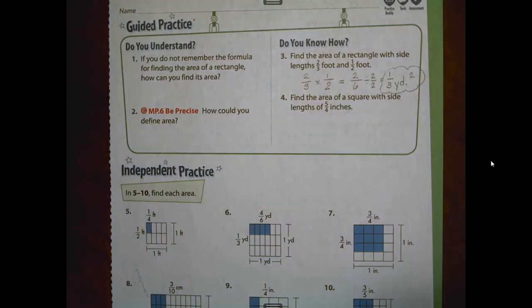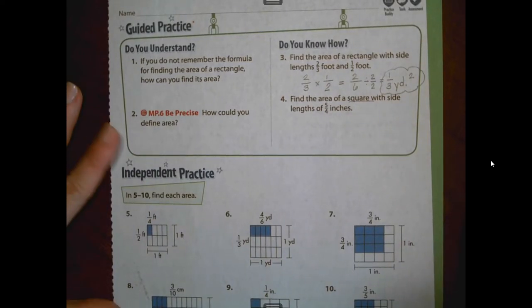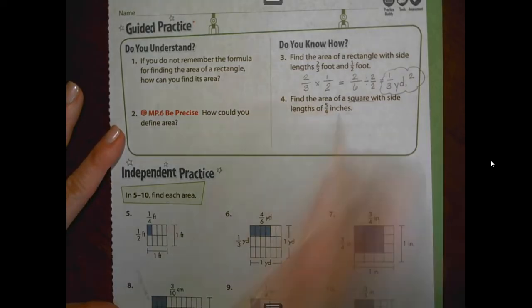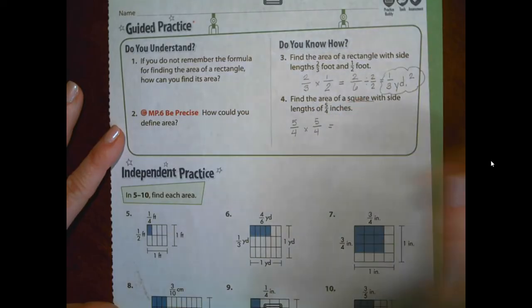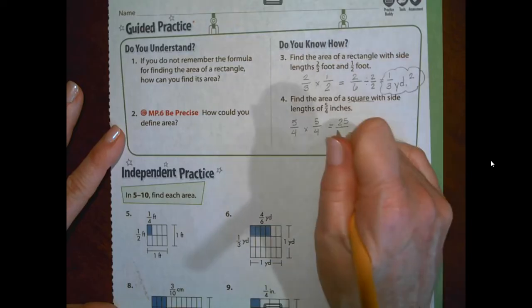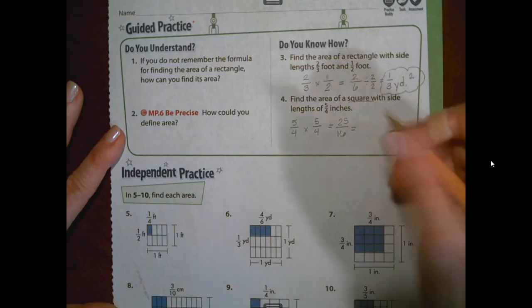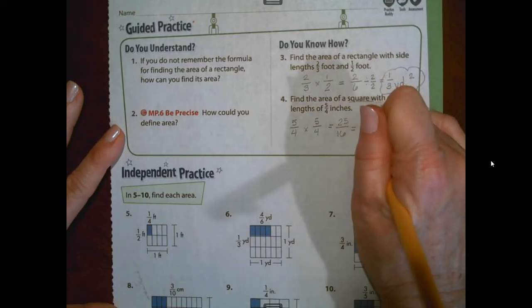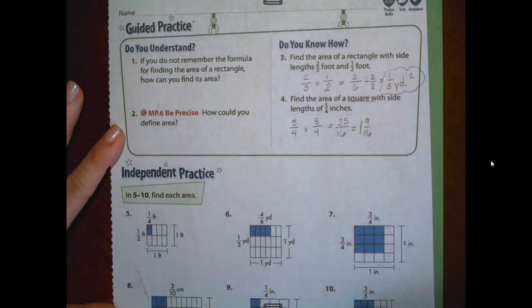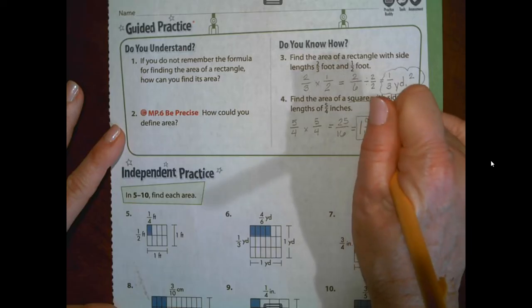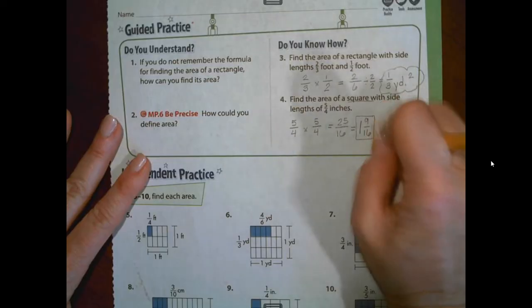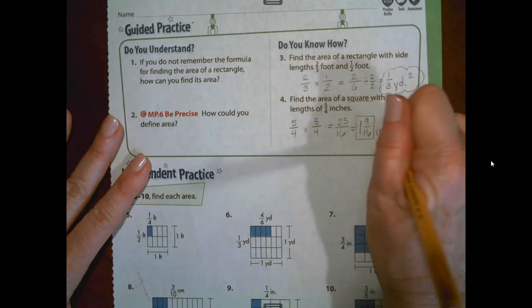Now, number four has a little bit of a trick to it because they're telling you to find the area of a square with side lengths of five-fourths inches. So what we know is that squares have four equal side lengths. So each one of them is a little greater than one whole. So five-fourths would be a length and five-fourths would also be a width measurement. Multiplying your numerators, you get 25. Multiplying your denominators, you get 16. That is an improper fraction. When you divide, 16 goes into 25 one time with 9 left over. 1 and 9 sixteenths. And those are, don't forget, these are inches, squared inches.